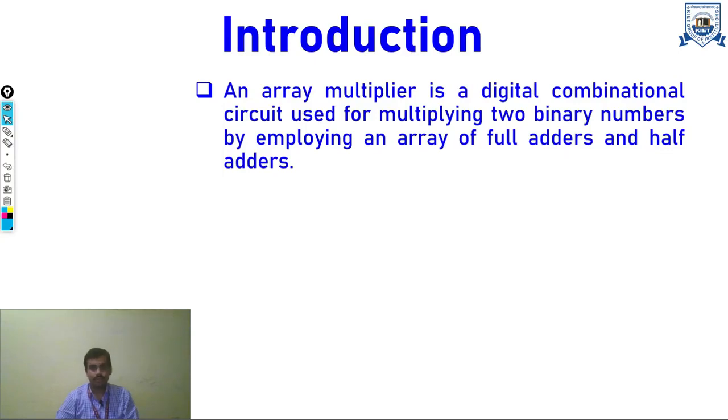multiplying two binary numbers by employing an array of full adders and half adders. What does it mean is in array multiplier, basically when we multiply two digits we use AND gates. So here we will use AND gates